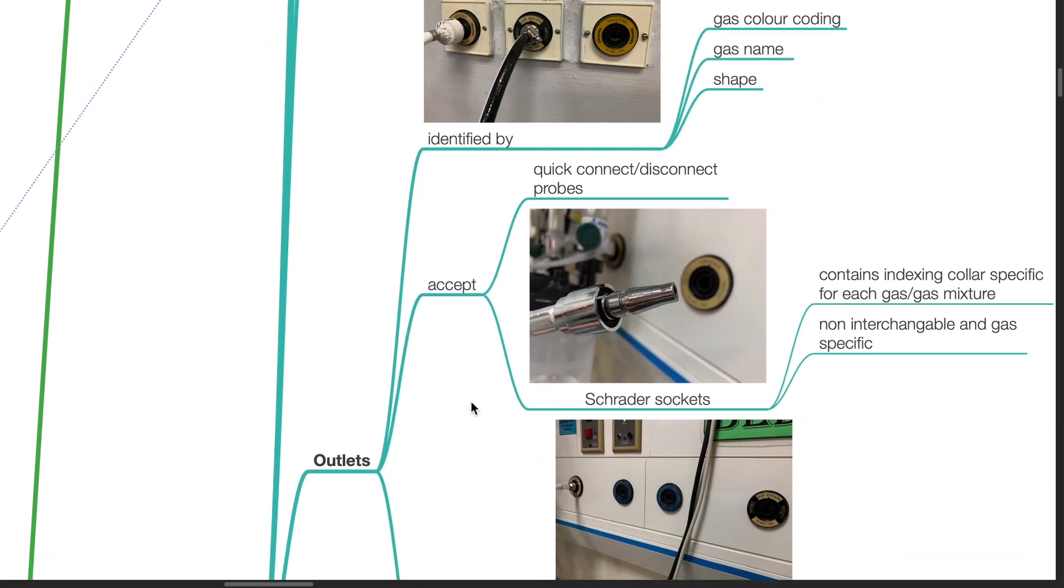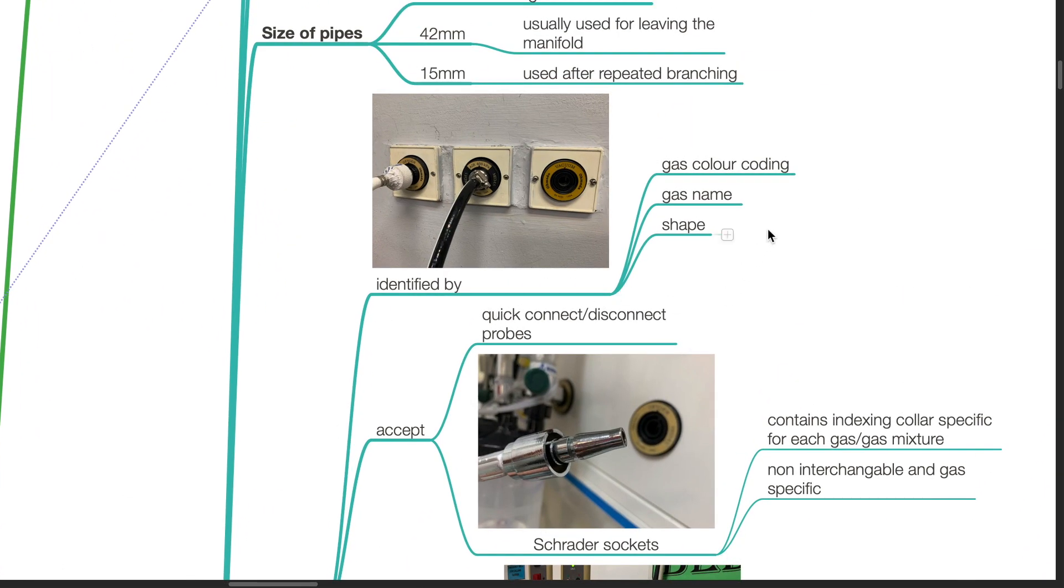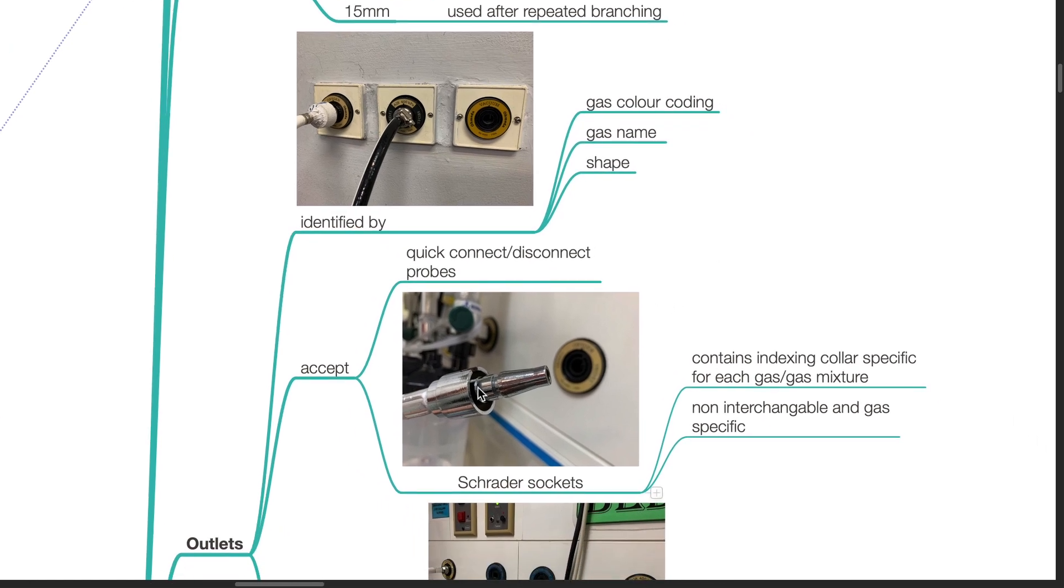Outlets are identified by gas color coding, gas name, and shape. These outlets accept quick connect and disconnect probes or Schrader sockets, which contain indexing color specific for each gas or gas mixture. It is non-interchangeable and gas specific.